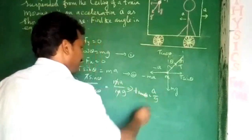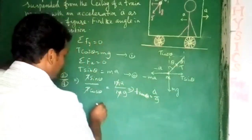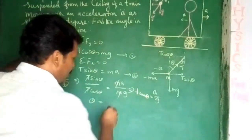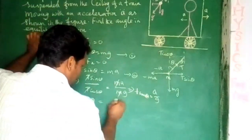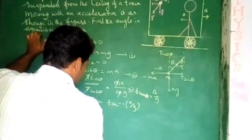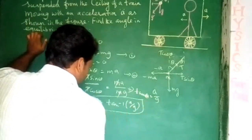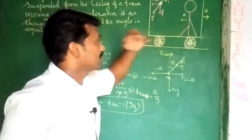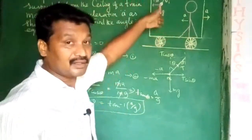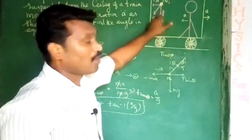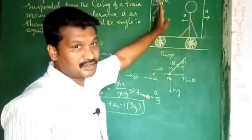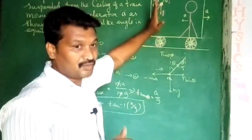So, then we can calculate the angle in equilibrium. Theta is equal to tan inverse of A by G. We can see how much angle the bob displaces from its vertical position.